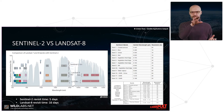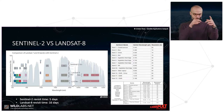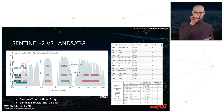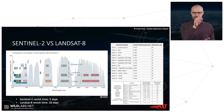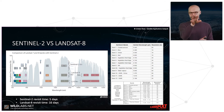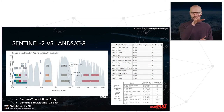Landsat 8 has some bands that Sentinel-2 doesn't have — for example, the thermal bands (bands 10 and 11) and the panchromatic band (band 8). But Sentinel-2 has a better representation of the red edge part of the spectrum with bands 5, 6, 7, and 8A, while Landsat has only one band in that portion.